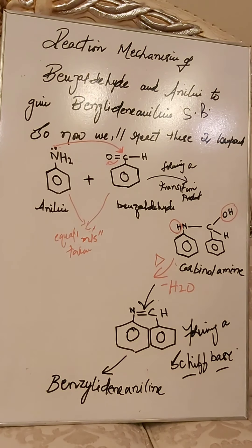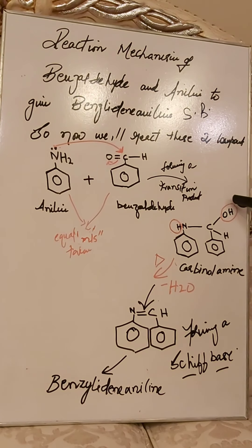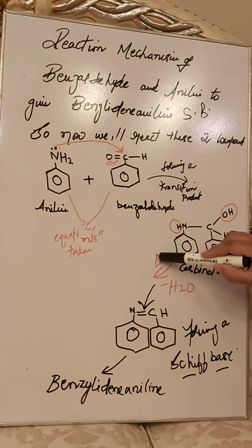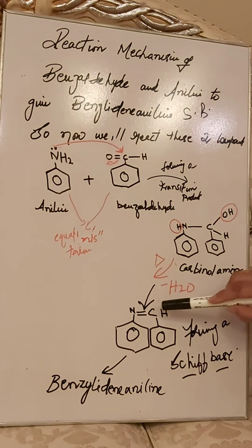When you heat the compound in the china dish, you will see water vapors — some sort of condensation is occurring. The OH from the carbinolamine and the H from the amine are removed together as a water molecule. After heating, you are left with your Schiff base, which contains the N=CH group — the azomethine group.